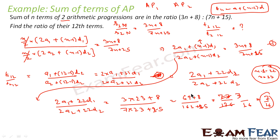So what we have done: we used the formula of SN and got the ratio of sums. Then we used the formula of TN and got the ratio of terms. We observed that putting N−1 = 22, i.e., N = 23, links the two equations and gives us the answer.